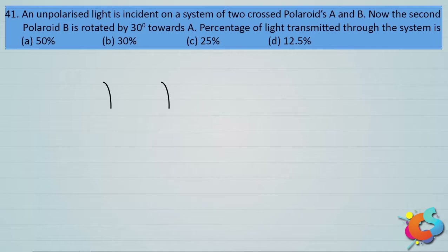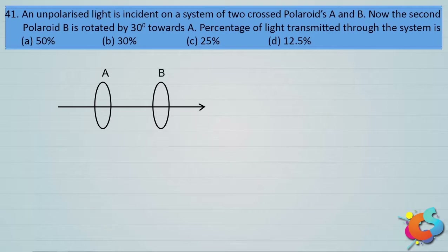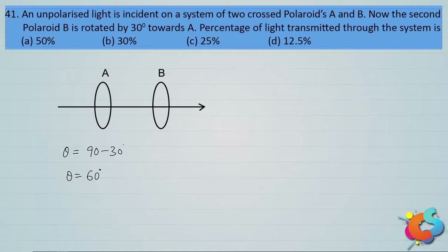When you consider a system of two polaroids, call them A and B. Initially they are crossed with respect to each other, which means the angle between them was 90 degrees. But later the second polaroid is turned through 30 degrees, so the angle between A and B changes from 90 to 90 minus 30, which is 60 degrees. So the angle between polarizer and analyzer is now 60 degrees.